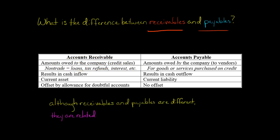The company is expecting to receive the money at some point in the future. With accounts payable, on the other hand, these are amounts owed by the company to their vendors. The company has purchased goods or services on credit, and they promise to pay for those goods or services at some point in the future.